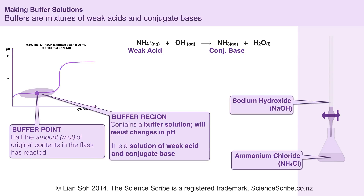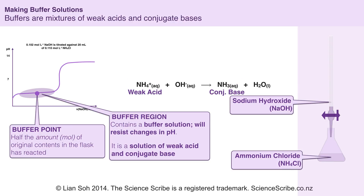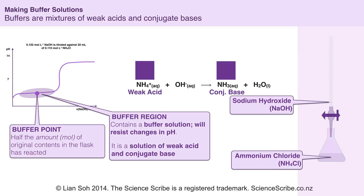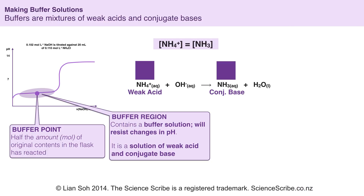Right in the middle of the buffer region is an area called the buffer point. At the buffer point exactly half the amount of my original contents in the flask has reacted. So let's say at the start I have some amount of ammonium ions and I'm adding just enough hydroxide to react with half of that. In doing so I'm going to produce ammonia. You can see that at the buffer point I've got the same amount of ammonium ions and ammonia, and therefore they would have the same concentration.